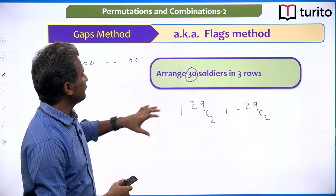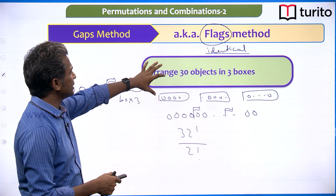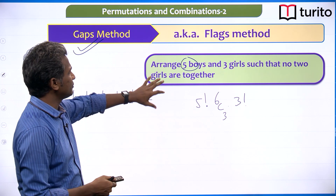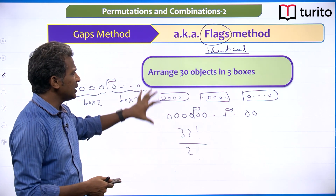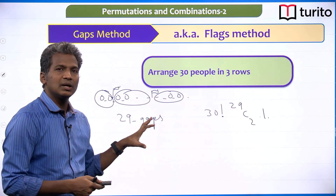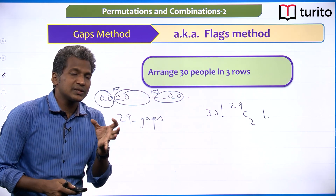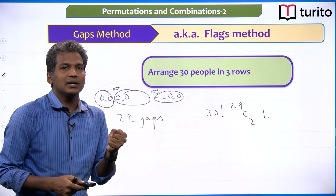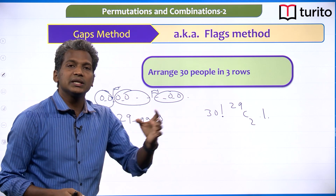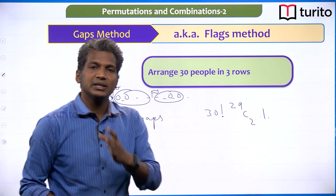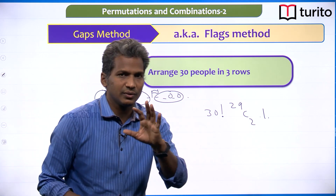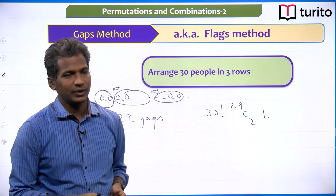The crux of all these methods — flags, gaps, directly permute, select-and-permute — is the same core idea: breaking the chain or string is the main concept.